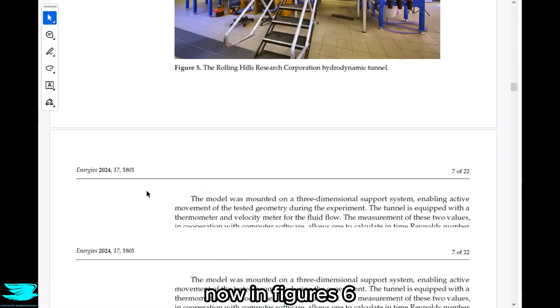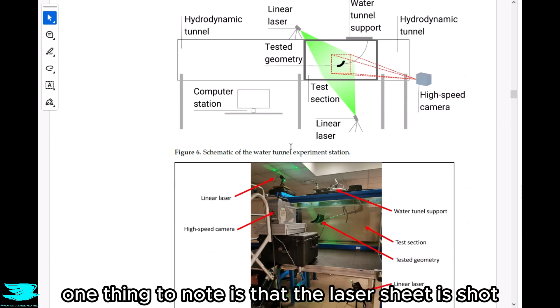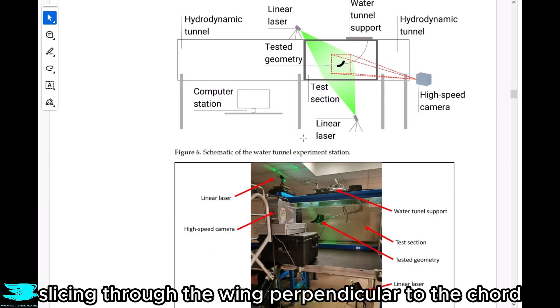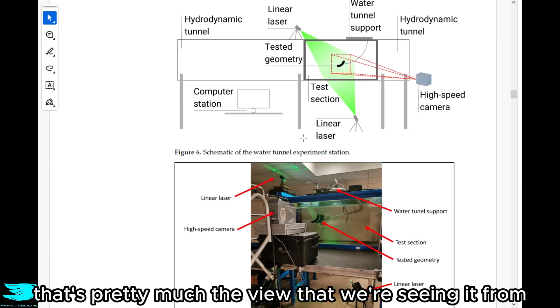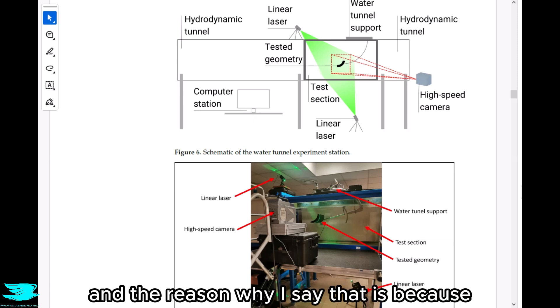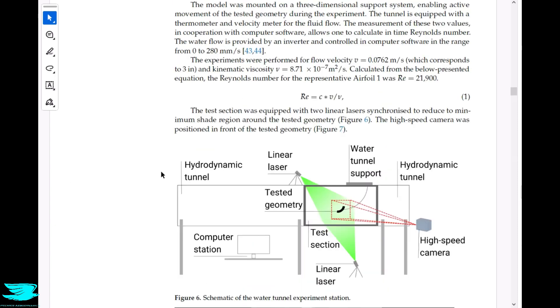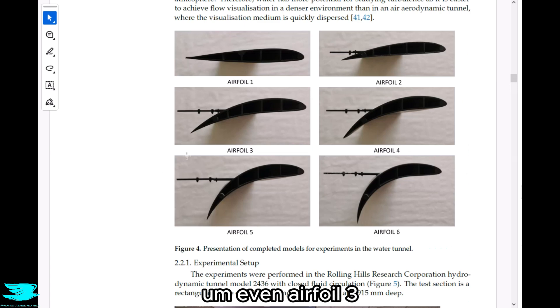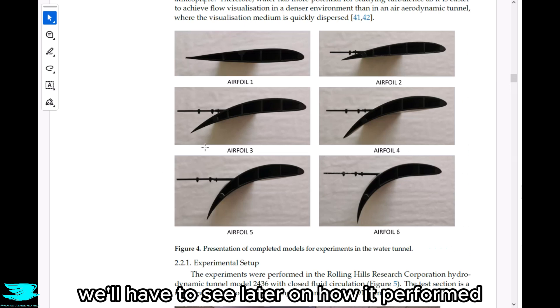Anyway, we have these six airfoils that they're testing. Now in figures six and seven, we see the PIV setup in their water channel and it's pretty standard. One thing to note is that the laser sheet is slicing through the wing perpendicular to the chord. The Reynolds number is 21,900, which is not great. And the reason why I say that is because at such a low Reynolds number, there is more chance that the flow will separate over the airfoil. So looking at figure four, even airfoil three stands a pretty good chance at this low Reynolds number for flow to separate over it.